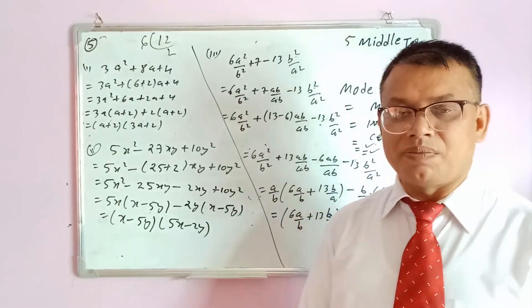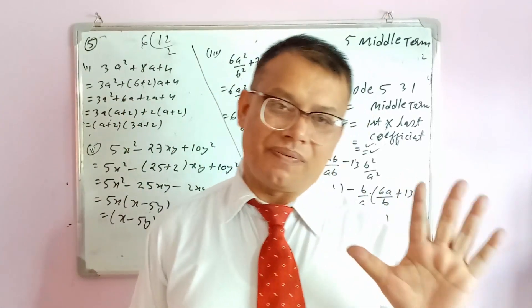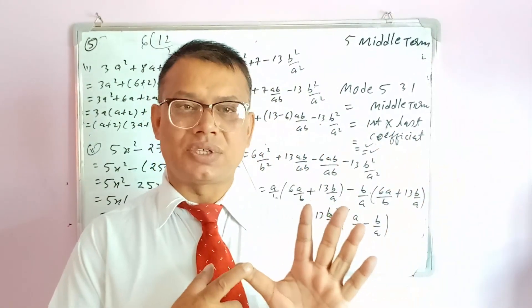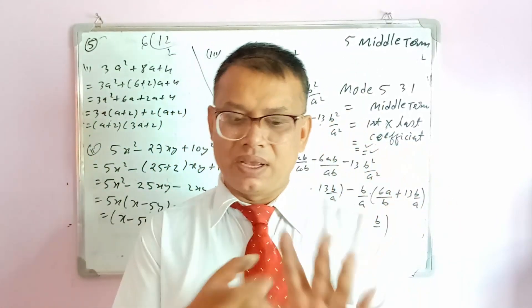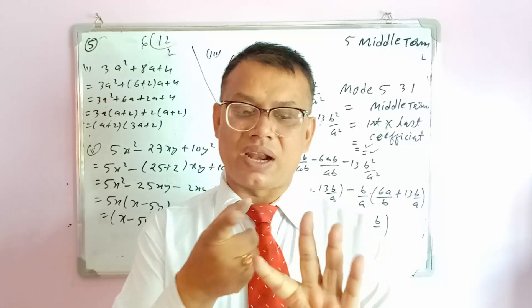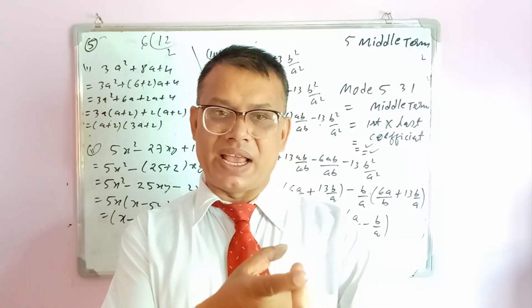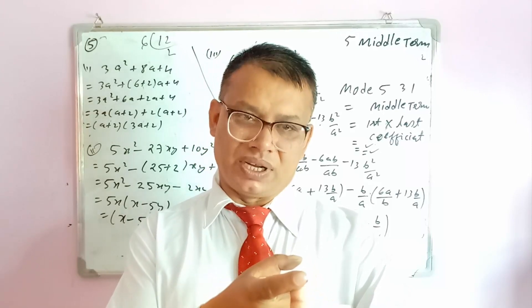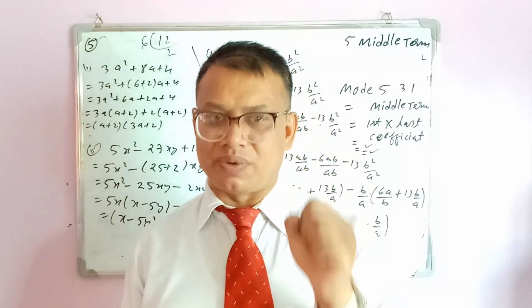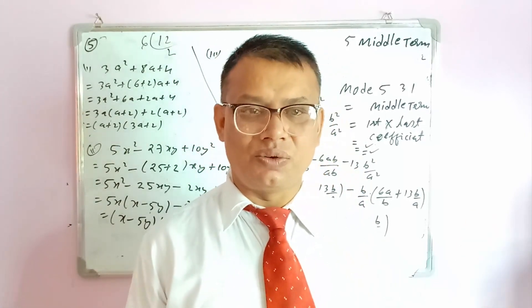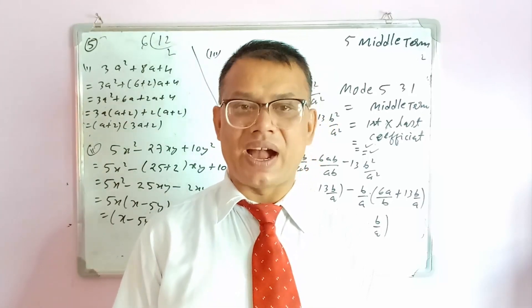These are the techniques of factorization. You can remember all five rules on your five fingers: Rule 1 is common factor, Rule 2 is a²−b², Rule 3 is a²+b², Rule 4 is a³+b³ and a³−b³, and Rule 5 is middle term. With these five rules, 90% of factorization problems can be solved. In the next video I will cover top factorization.